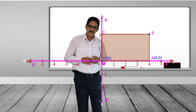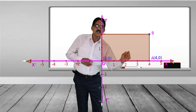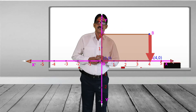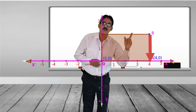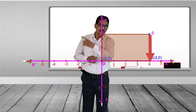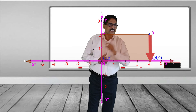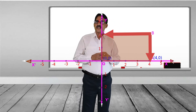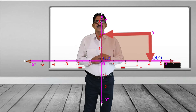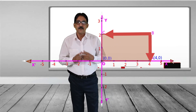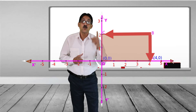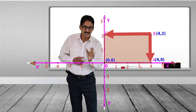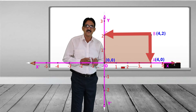Now find the coordinate of B. We should draw a line perpendicular to the x-axis — the x-coordinate of B is 4. To find the y-coordinate of B, draw a perpendicular line to the y-axis, as we studied last class. It meets at 2, so the coordinate of B is (4, 2).